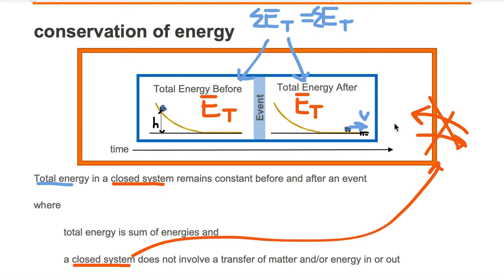We have converted all of our potential energy into the motion of the sled moving to the right, which is called kinetic energy. The only energy in the after-event is kinetic energy. The only energy in the before-event is potential energy. We converted all of our potential energy into all of our kinetic energy.